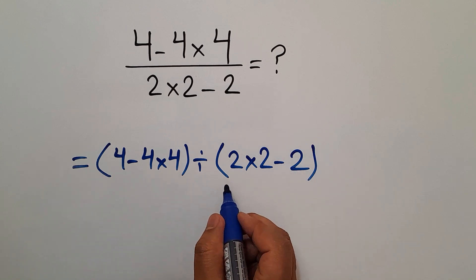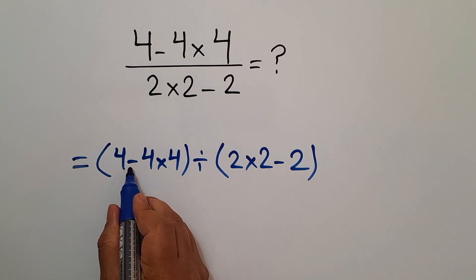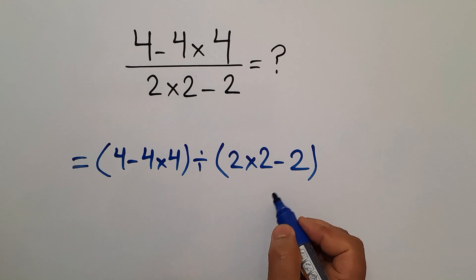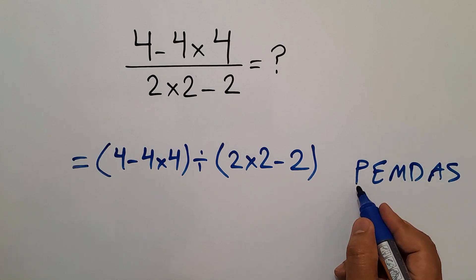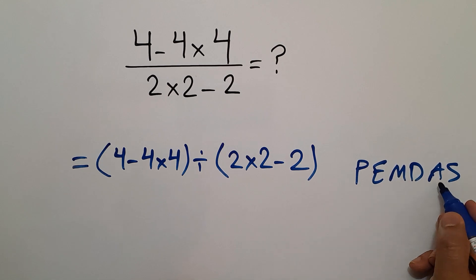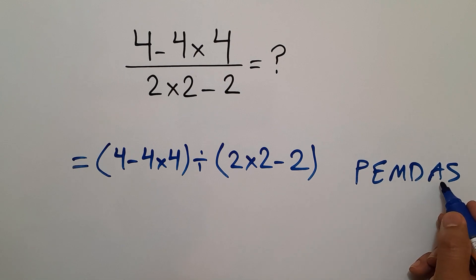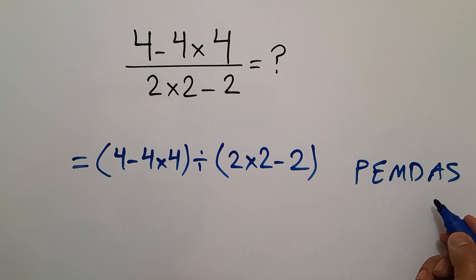In this expression, we have two parentheses and one division. Inside the first parentheses, we have one subtraction and one multiplication. Inside the second parentheses, we have one multiplication and one subtraction. According to the order of operations, which is PEMDAS: P stands for parentheses, E for exponents, M and D for multiplication and division, and A and S for addition and subtraction. Remember that multiplication and division have equal priority and we work from left to right. The same goes for addition and subtraction.